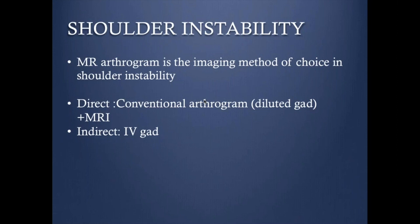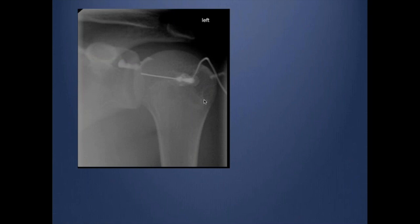I don't find the indirect method helpful. With three tesla and high resolution, some feel we might not need the arthrogram, but I still prefer it for the distinction it provides. I perform the arthrogram under fluoroscopy via an anterior approach, injecting contrast to confirm I'm in the joint after sterilization, then injecting 10 to 15 cc of diluted gadolinium before sending the patient to MRI.